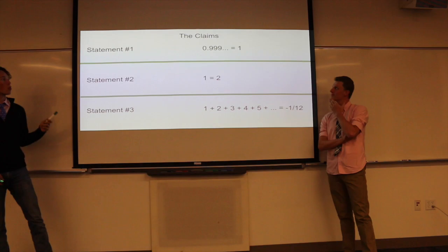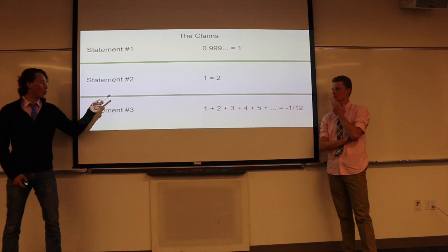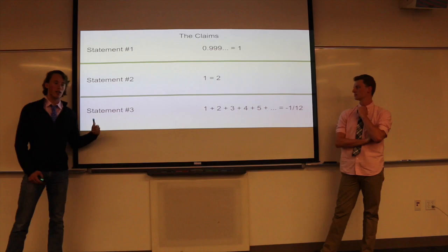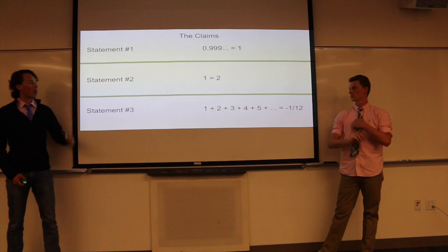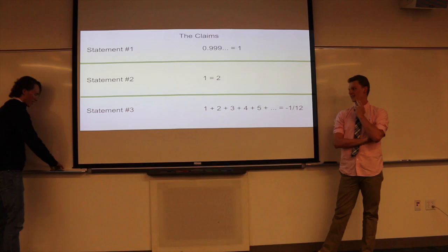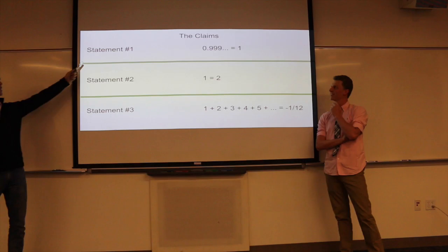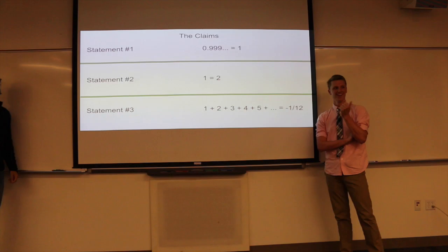For our three mathematical claims, our first mathematical claim is that 0.999999 all the way repeating is actually equal to 1. Our second proof is that 1 is equal to 2, and our third mathematical proof is that 1 plus 2 plus 3 plus 4 plus 5 plus 6, all the way up, all of the positive integers when added up equal negative 1/12.